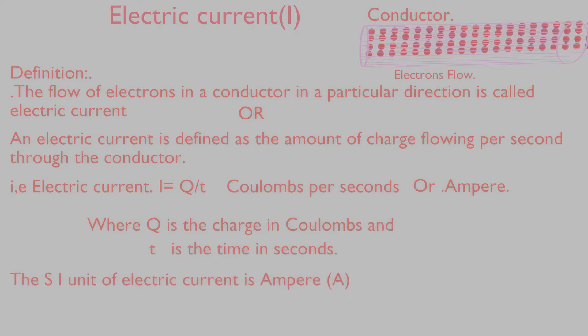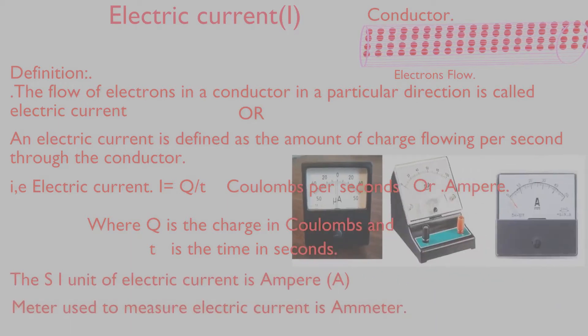The SI unit of electric current is Ampere (A). The meter used to measure electric current is Ammeter.